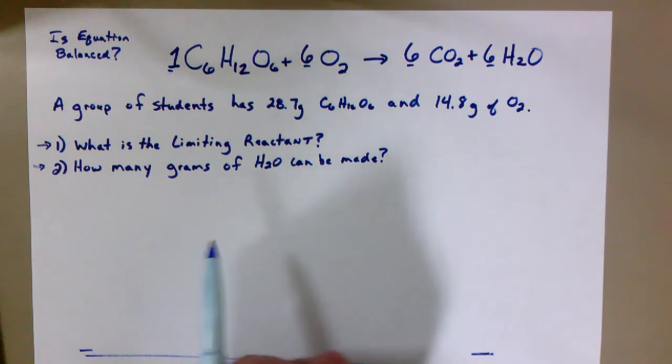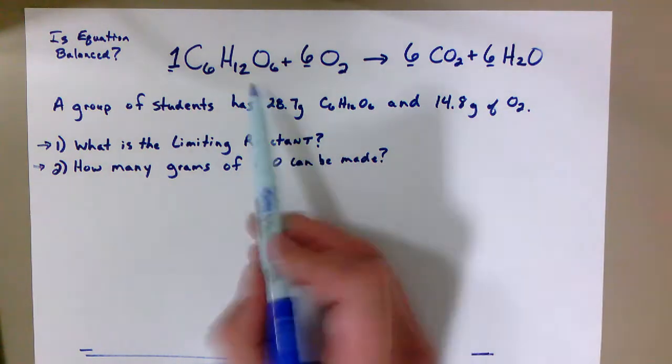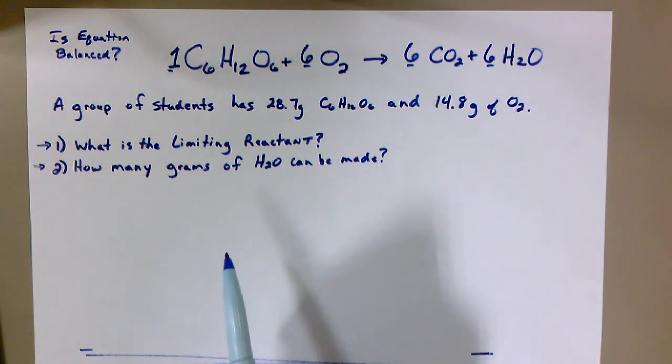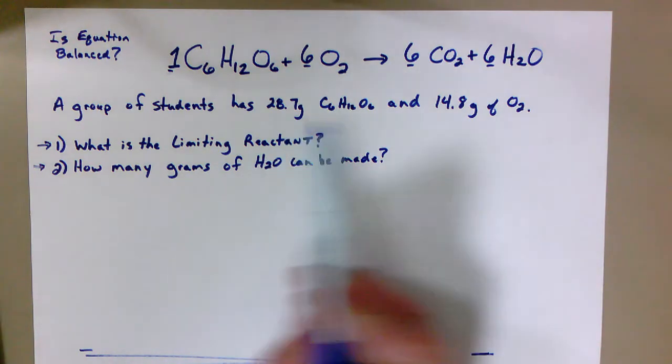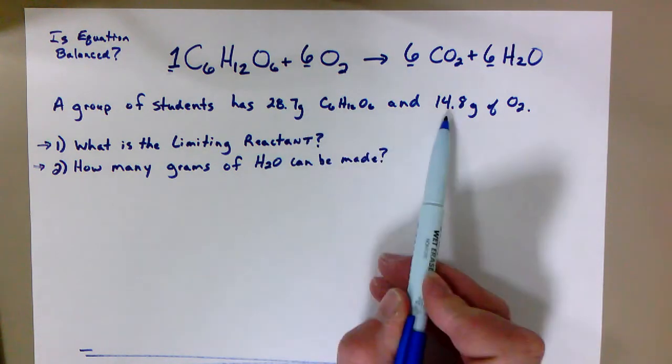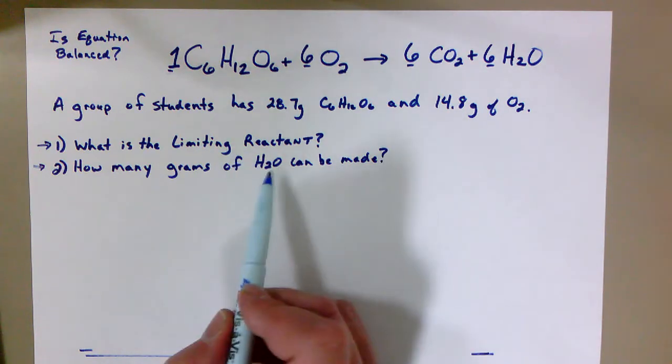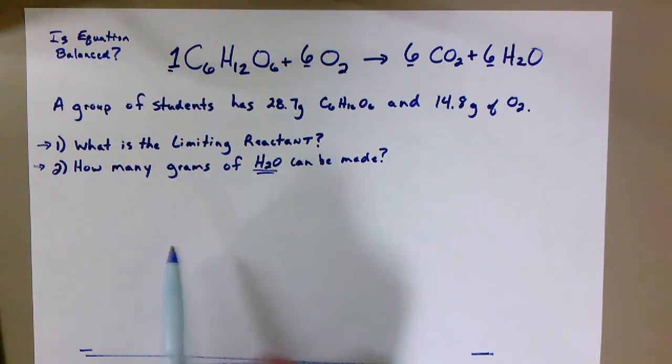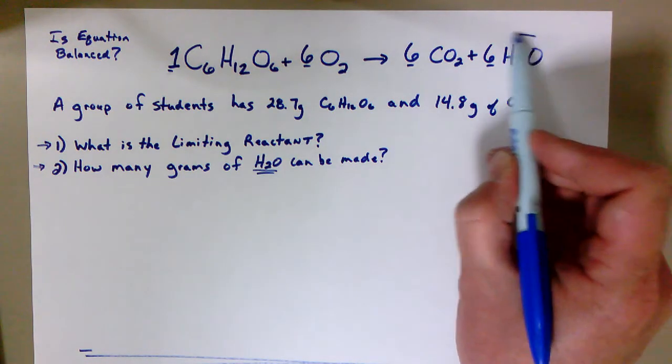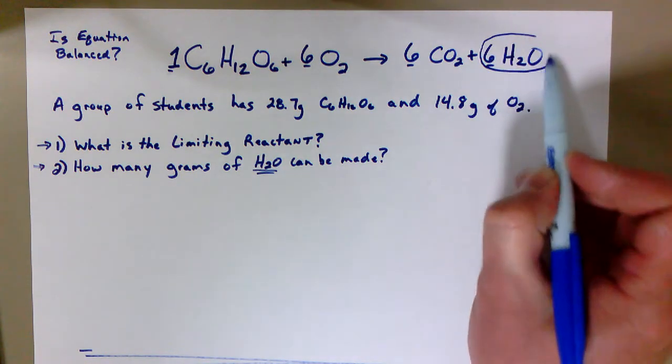The second question is: how many grams of H2O or water can be made? So in a limiting reactant problem, the typical process is first up balance your equation, and then in the second step we do a stoichiometry calculation where we pick a product and we figure out for each of the reactants how much of that product we can make. Always take a look and say is there a question that's going to ask us for a specific product?